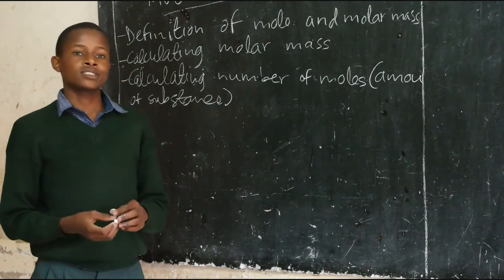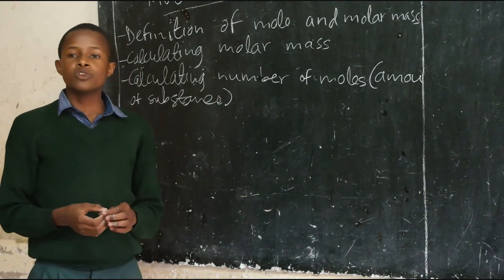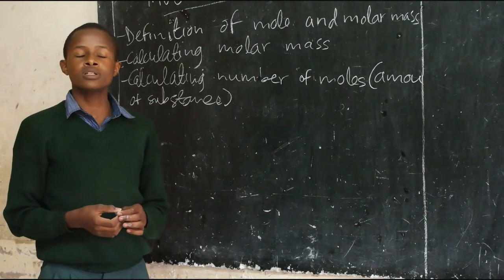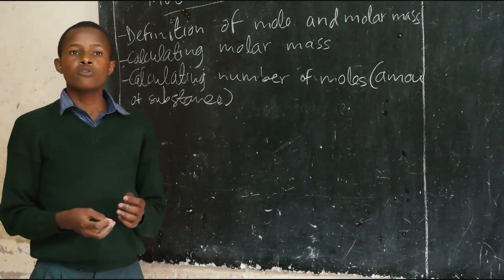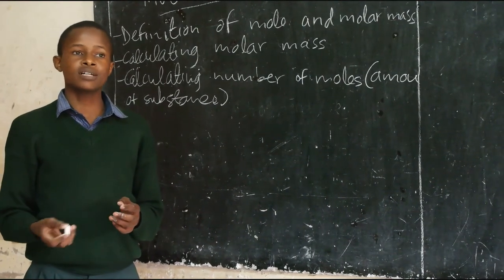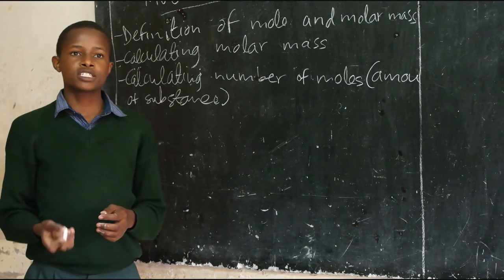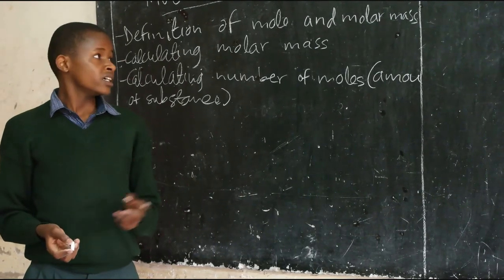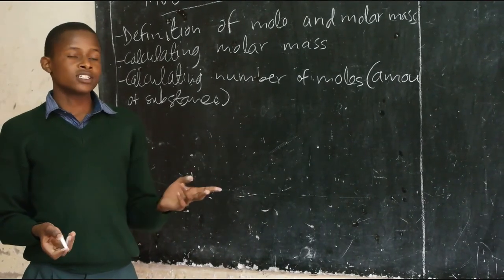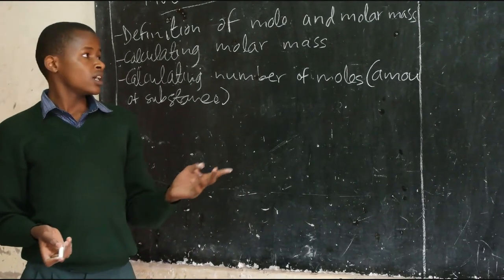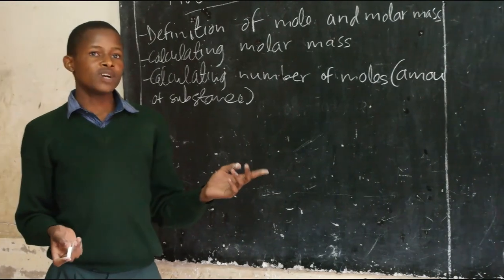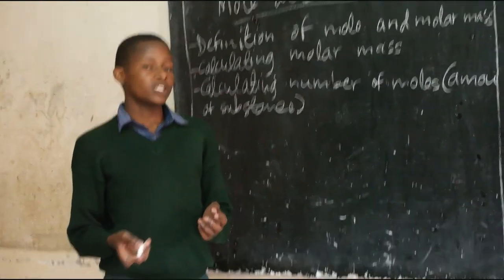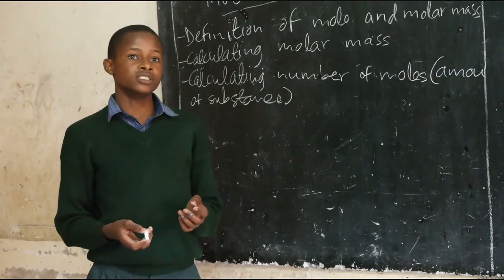Then, molar mass. Molar mass is the mass of one mole of a particular substance in grams, expressed as grams per mole. This molar mass is the same as atomic mass, but atomic mass does not have an SI unit.